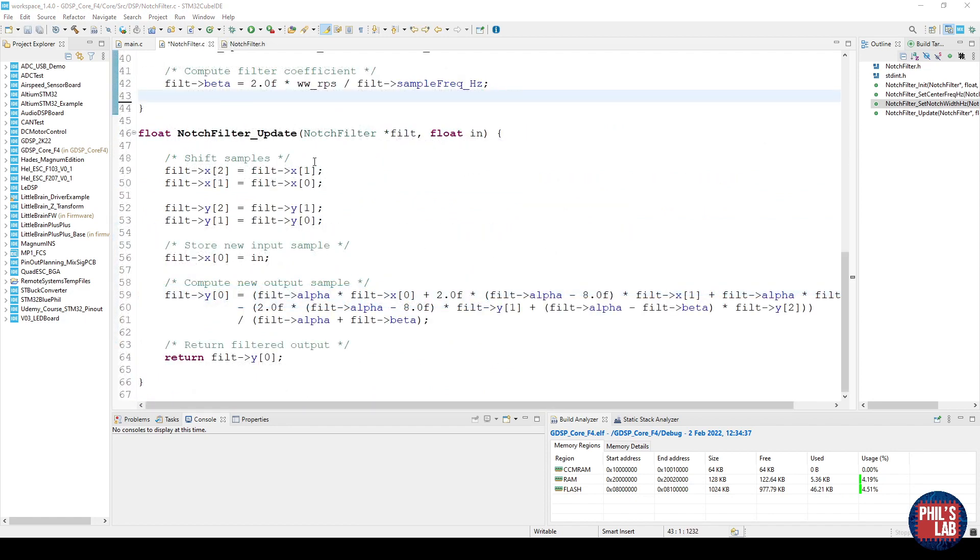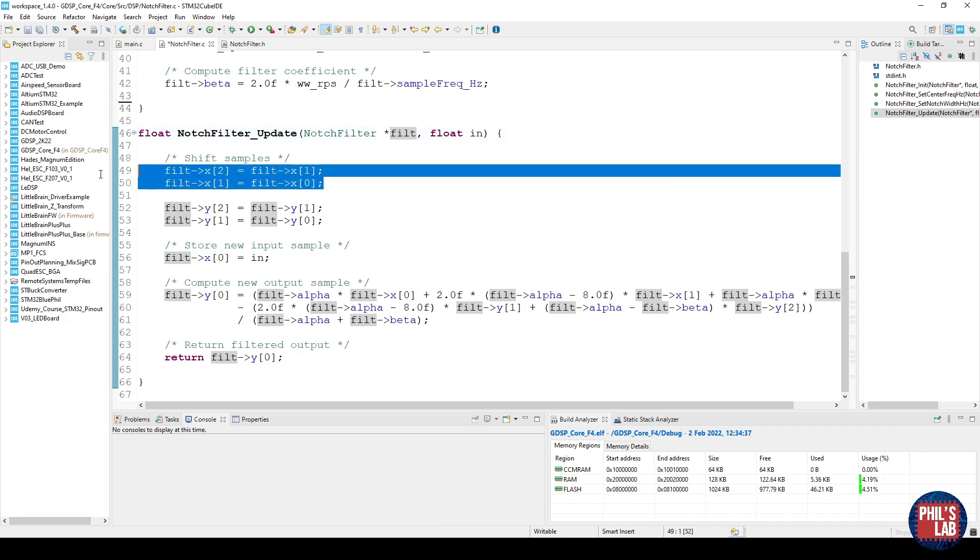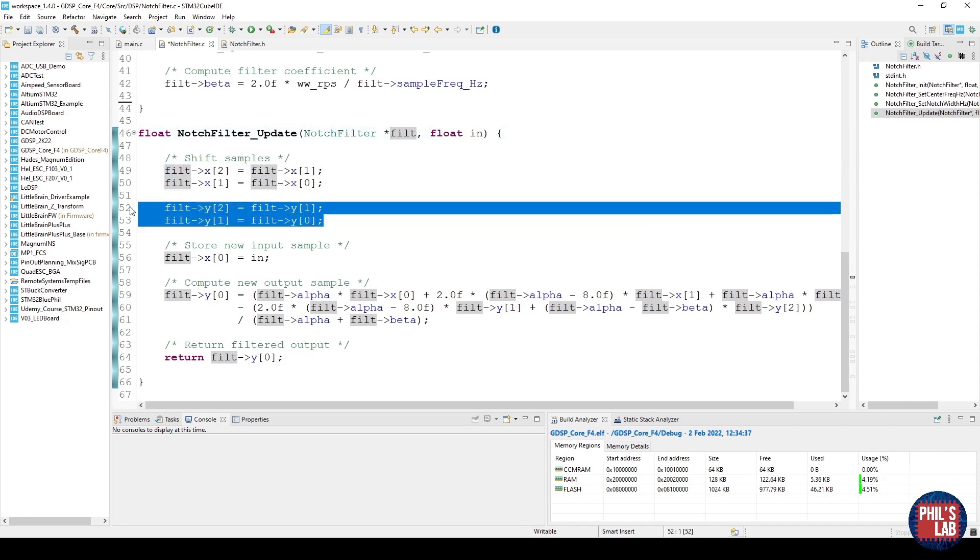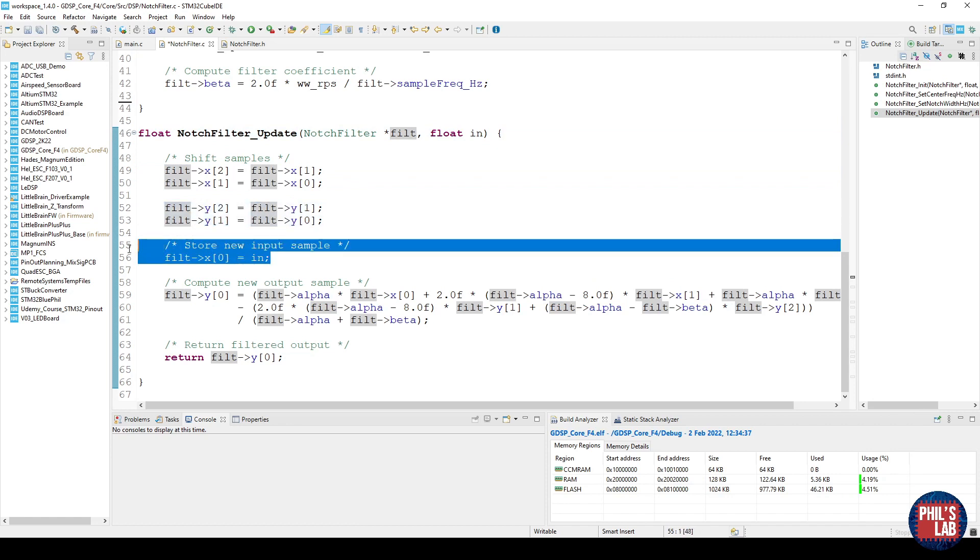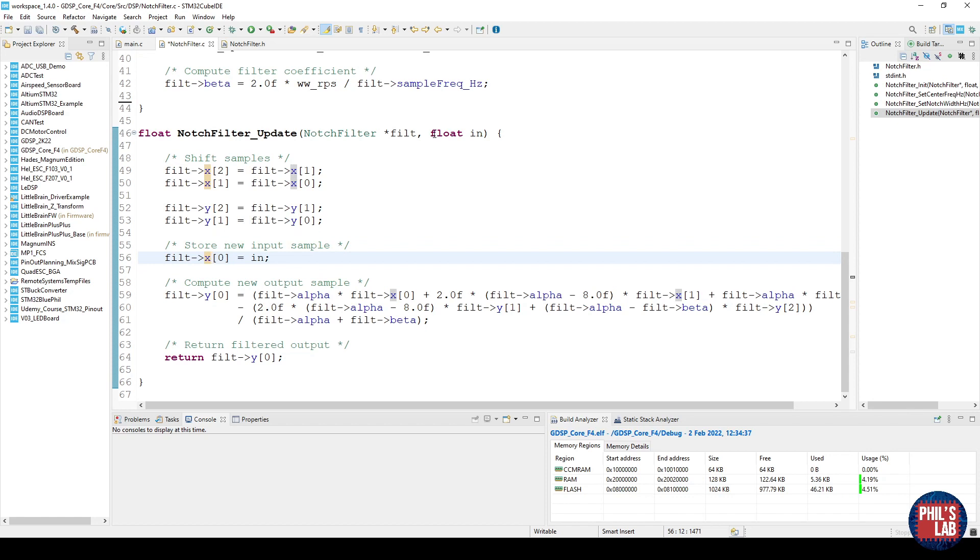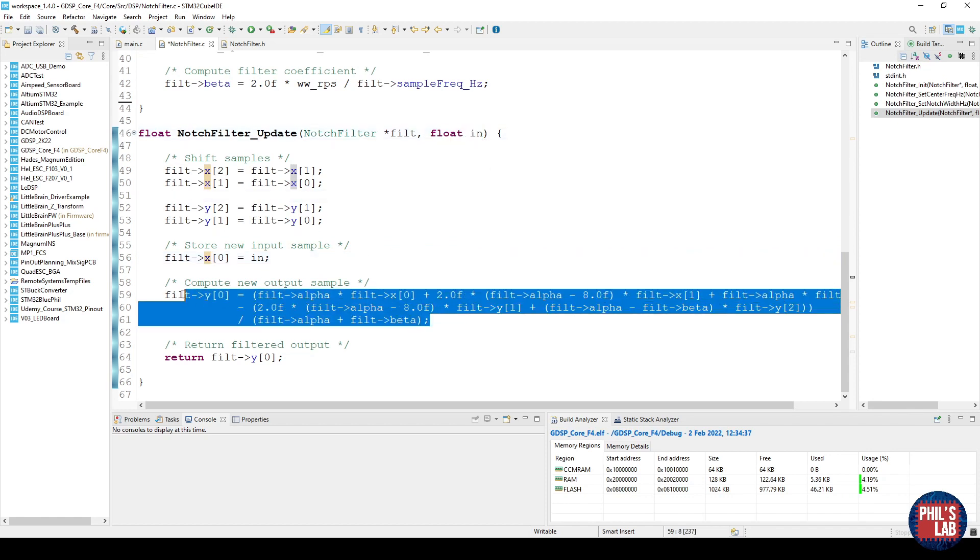Something similar for the notch width, I'm converting my filter frequency to angular frequency and computing my filter coefficient. Now most interestingly this is the update function, I take in my input sample and I give a processed output. So first of all I have to shift my samples, shifting my input samples and shifting my output samples, because I will be using these in my output sample calculation. Then I store my newest input sample at x0, this will be x_n so to speak, and that's just my input.